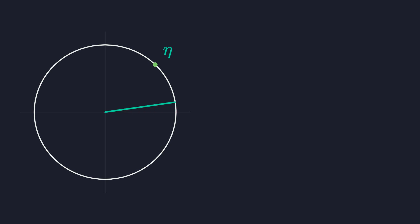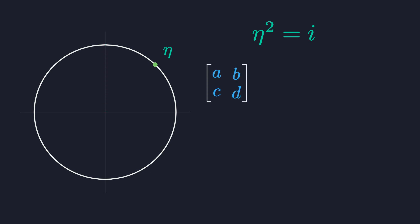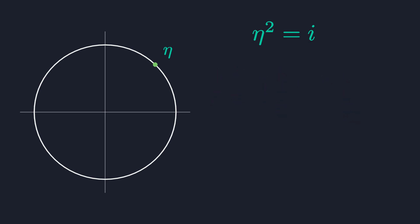How about the complex number eta — one of the square roots of i, because it squares to i. To turn it into a matrix, it seems we have to take the square root of a 2x2 matrix. One approach might be to start from an unknown matrix, square it, and demand that it equals i — giving four equations to solve. But the equations are non-linear and the algebra doesn't give useful intuition. Instead, we should return to geometry.